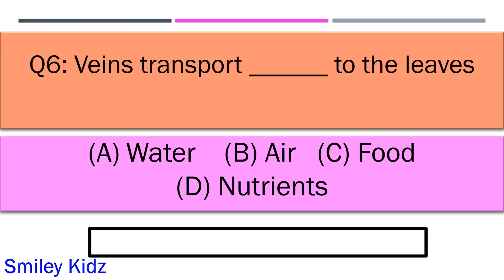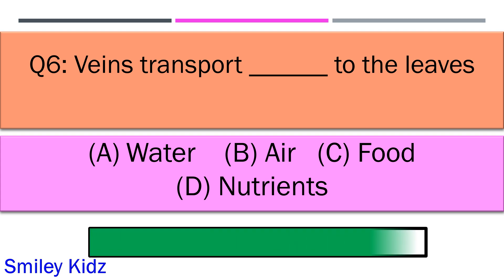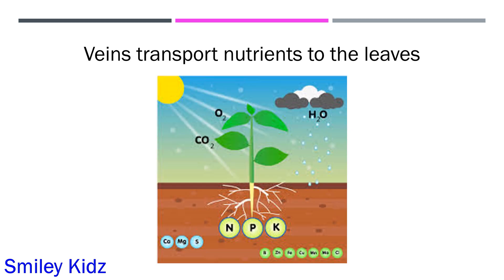Veins transport dash to the leaves. Option A water, option B air, option C food, option D nutrients. Your time starts now. And your time is up and the right answer is option D nutrients.